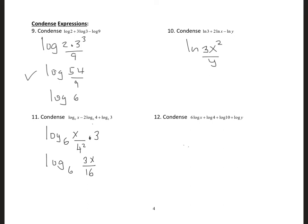The next one: we have logarithm to base 10, so that's going to be x to the power 6, multiplied by 4, then multiplied by 10, then multiplied by y. We can write this as logarithm to base 10 of 40 times x to the power 6 times y. That will be the answer.